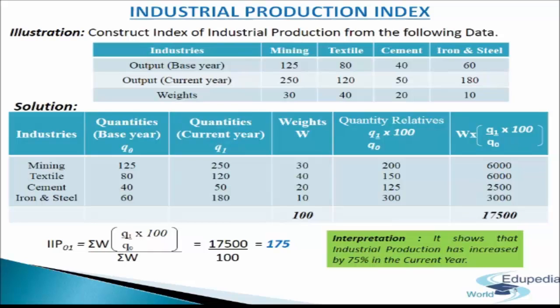Let us start with the solution. We have to make a table of 6 columns. In the first column we write the names of industries: mining, textile, cement, iron and steel. In the second column we write base year quantity Q₀: 125, 80, 40, 60. In the third column we write current year quantity Q₁: 250, 120, 50, 180. In the fourth column we write weights W: 30, 40, 20, 10. Adding these up gives σW = 100.